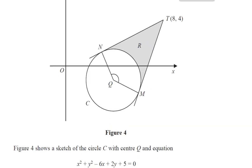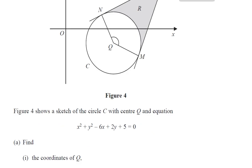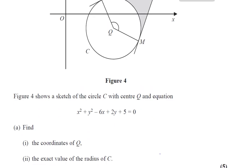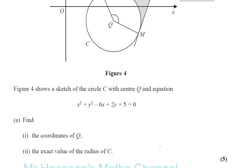It says figure 4 shows a sketch of a circle C with center Q and equation as given. Find the coordinates of Q and the exact value of the radius C.